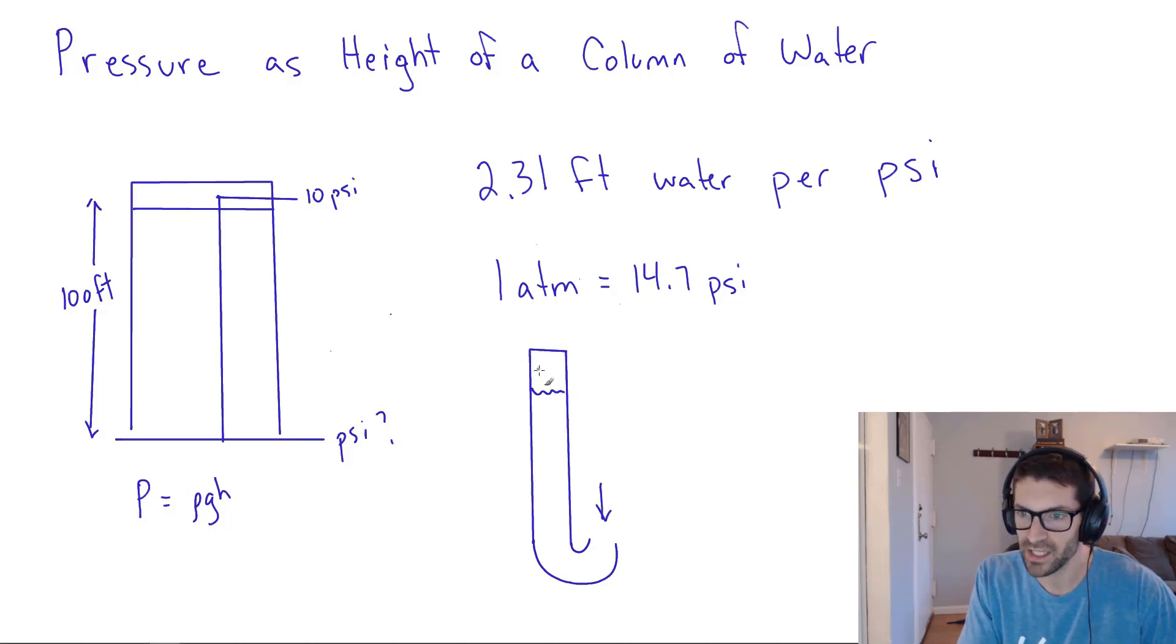Then theoretically, that 14 psi of atmospheric pressure that's pushing down over here is pushing up on the column of water. Now imagine we made this column this very high, would it go up infinitely high? No, because the atmosphere doesn't have an infinite amount of pressure. It would only go up so high.